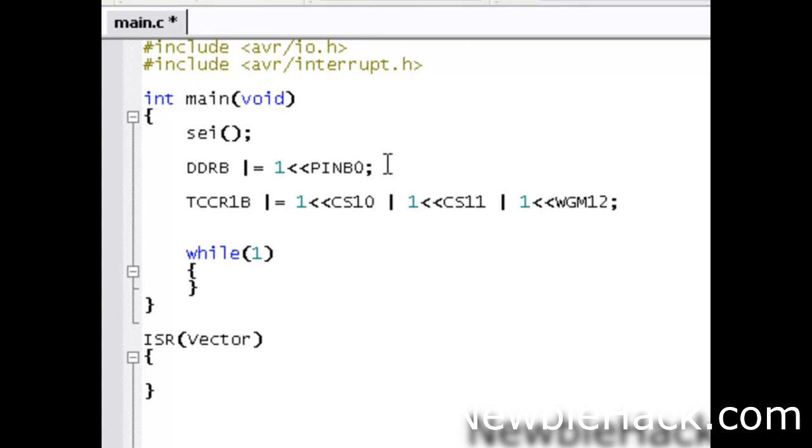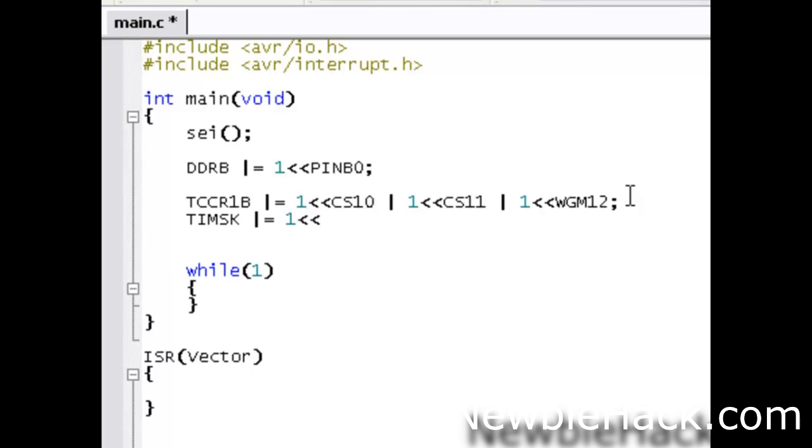And then, our next line is going to be the timer mask. The timer mask is timer interrupt mask. And we are going to do the same thing, bitwise OR. And we're going to be putting a 1 in the output compare interrupt enable for the 16-bit and A. And this is going to be associated with the OCR1A. We also have an OCR1B and an OCIE1B as well. We could use that as an alternative.